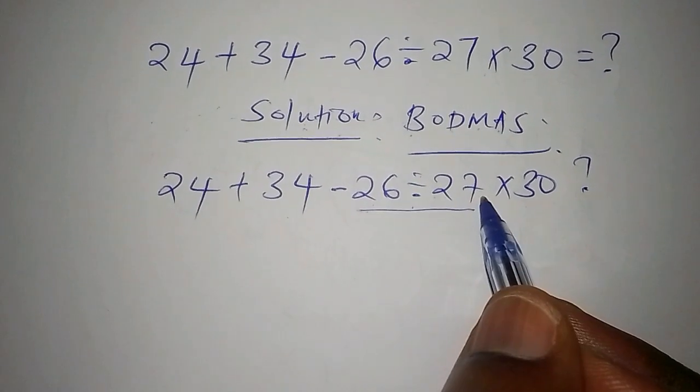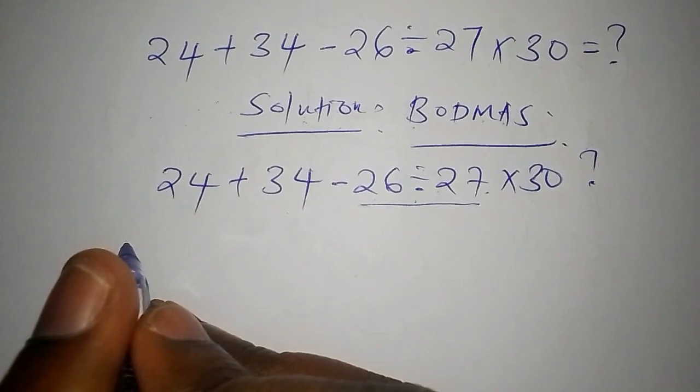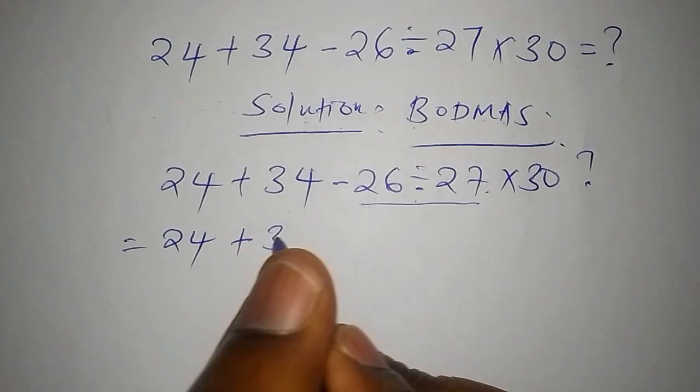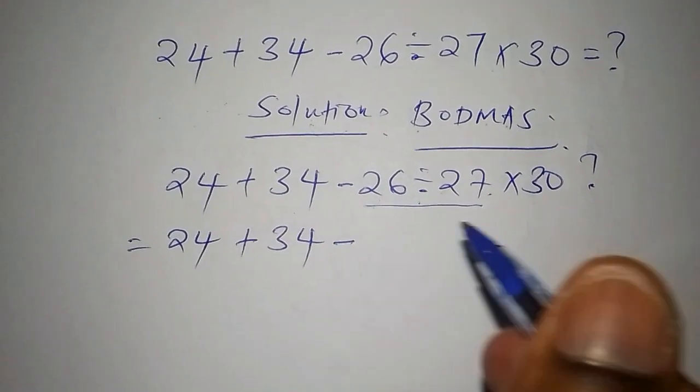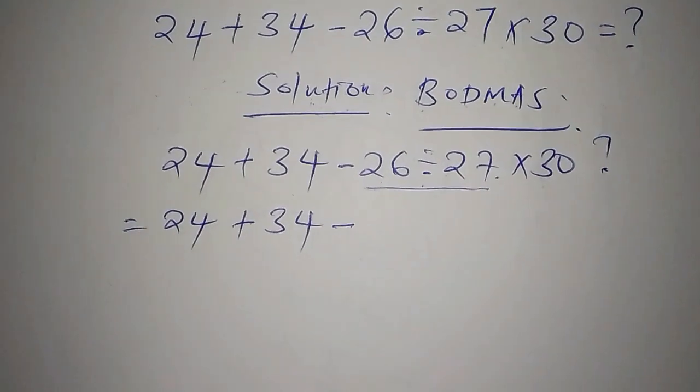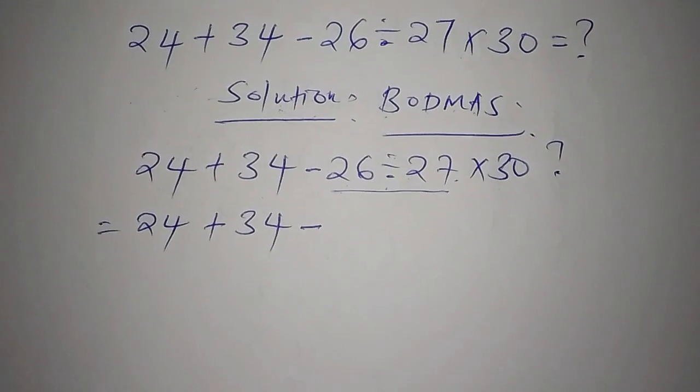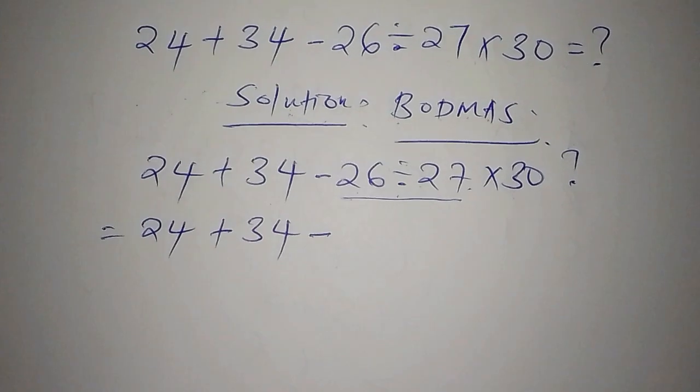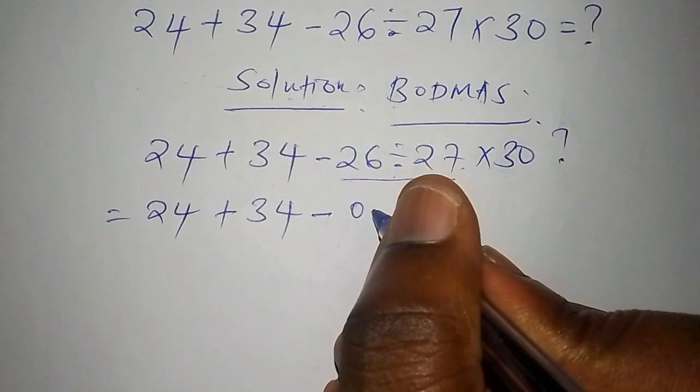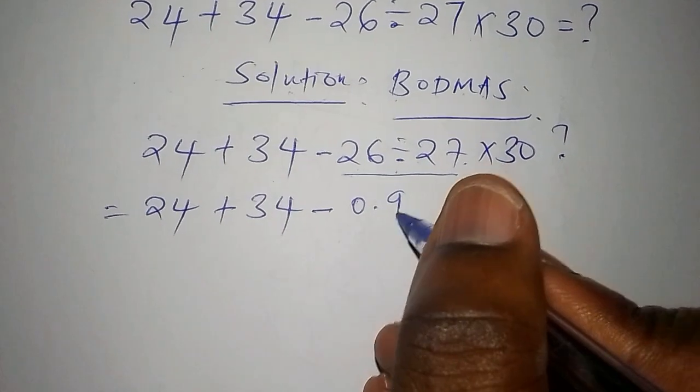So we shall say this one is equal to 24 add to 34, subtract from 26 divide by 27. And 26 divided by 27, the answer is 0.96. So we shall say 0.96.